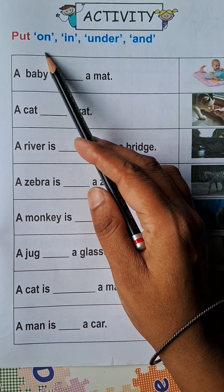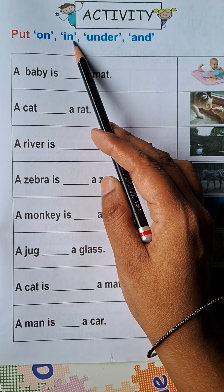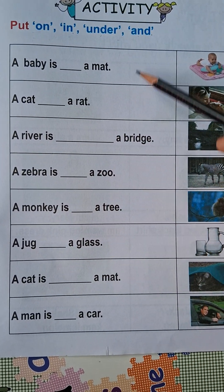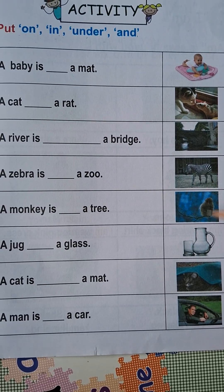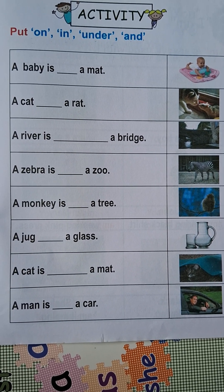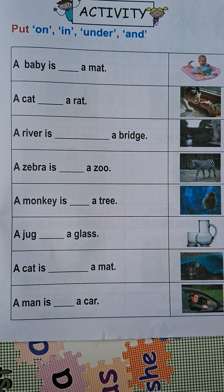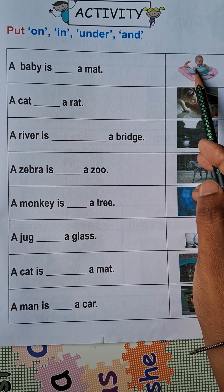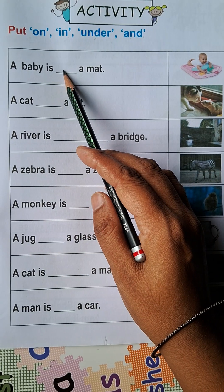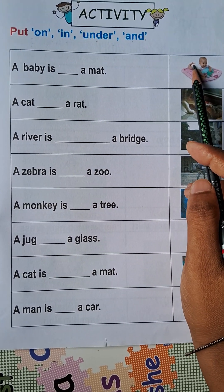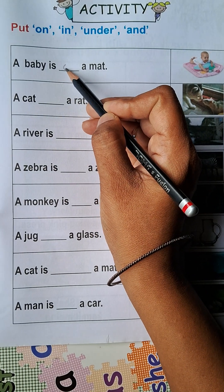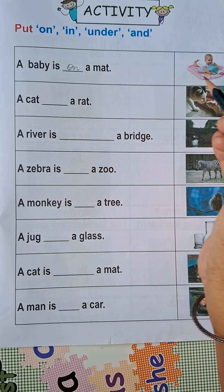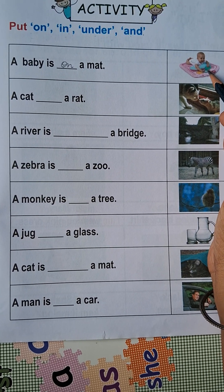Now we will do this exercise using on, in, under, and 'and' — all the prepositions we have learned so far. We have to fill in the blanks according to the pictures. So: a baby is dash a mat — mat ke oopar hai, so for on top we use 'on' — a baby is on a mat.